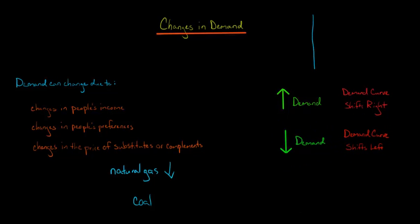So let's just say we've got here, here's our graph, and we've got our demand curve. It's downward sloping, so this is D1.